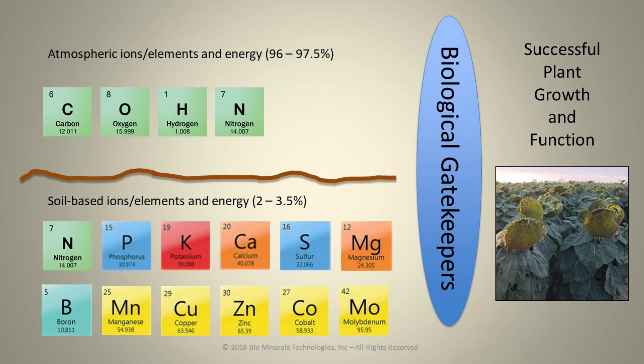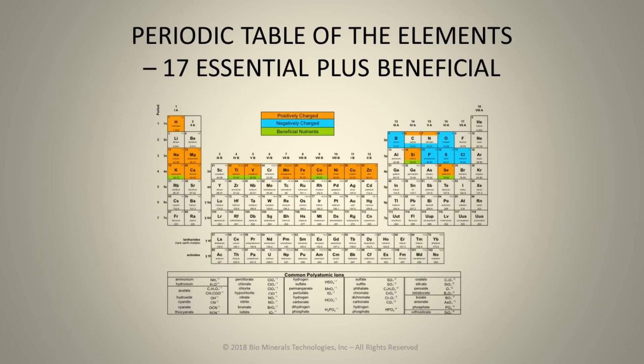The key to utilizing our atmospheric gases and our soil elements is the biological gateway in which they become soluble, so that a plant can actually take them up and use them in the best form. When we look at the periodic table of elements, we understand that there are 17 essential nutrients required for plants to live and function at a minimum. But just looking at the bare minimum of what is essential does not do justice to the scope of minerals actually used and needed by the plant for all of its functions — including plant primary metabolites and plant secondary metabolites.